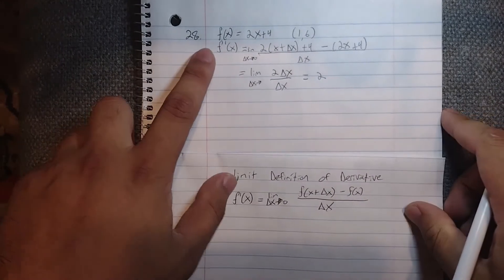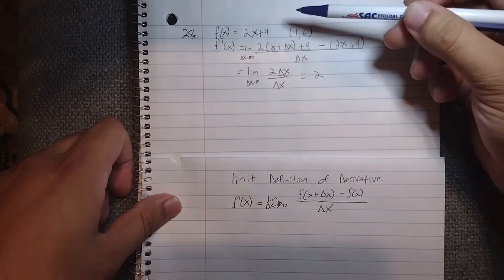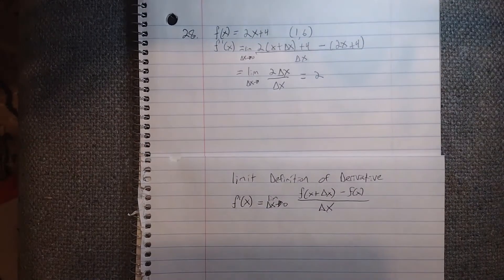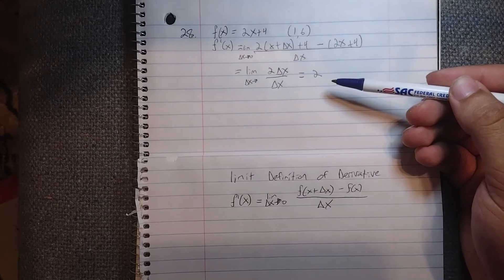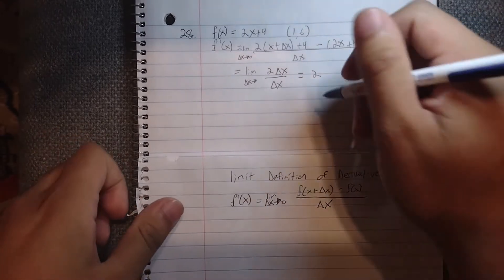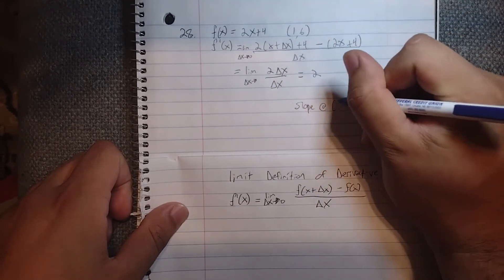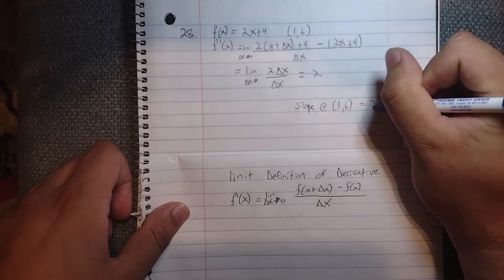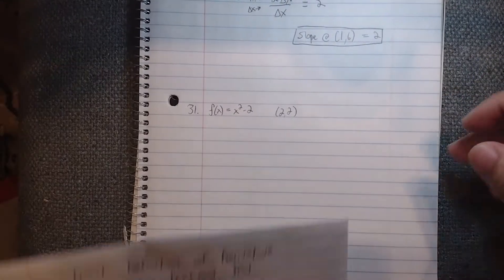The derivative of this function is just the number 2. The point given was (1, 6), but that point is actually irrelevant to this derivative because the slope is the same everywhere. So the slope of the tangent line at point (1, 6) equals 2. Let's move on to problem 31, remembering our limit definition of the derivative.